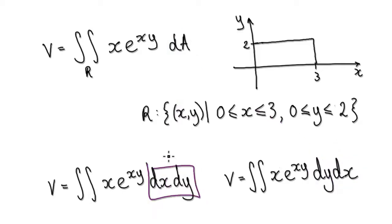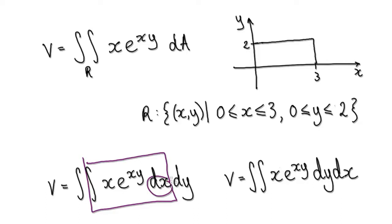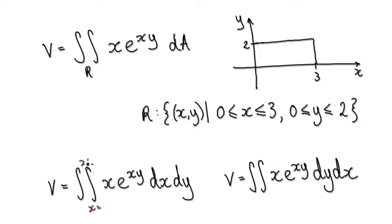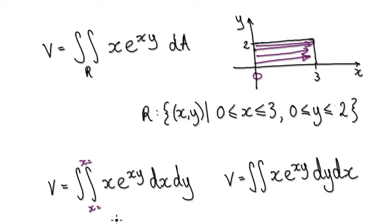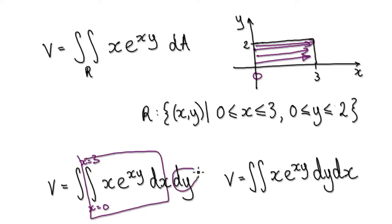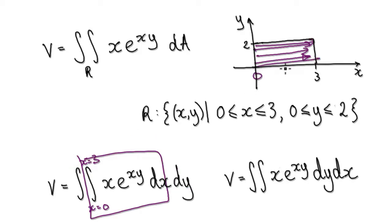If you choose the dx dy option, the inner integration is dx, so you need X equals something on each side. You're moving parallel to the X axis, scanning from 0 to 3, so the inner integral goes from 0 to 3.